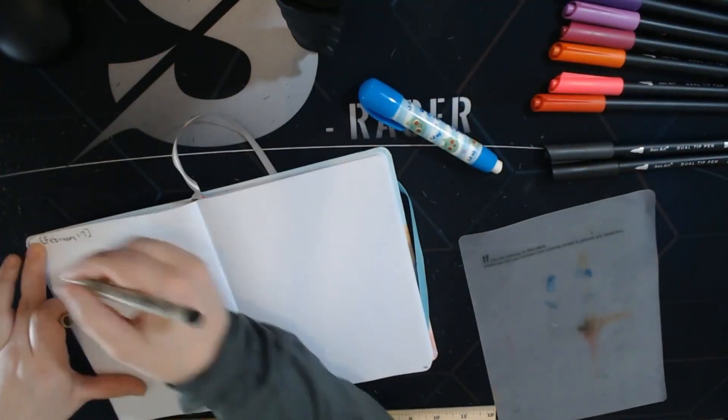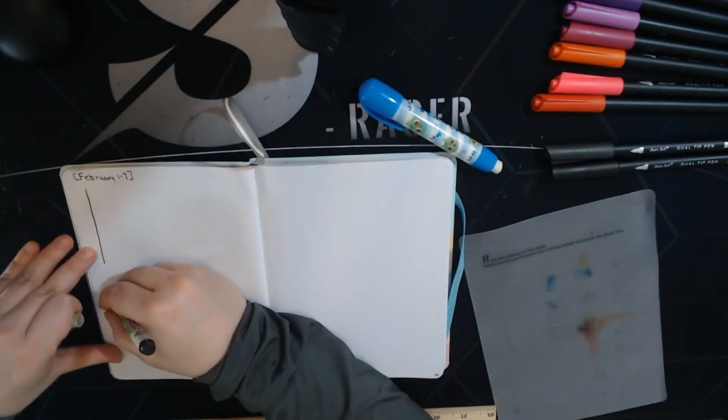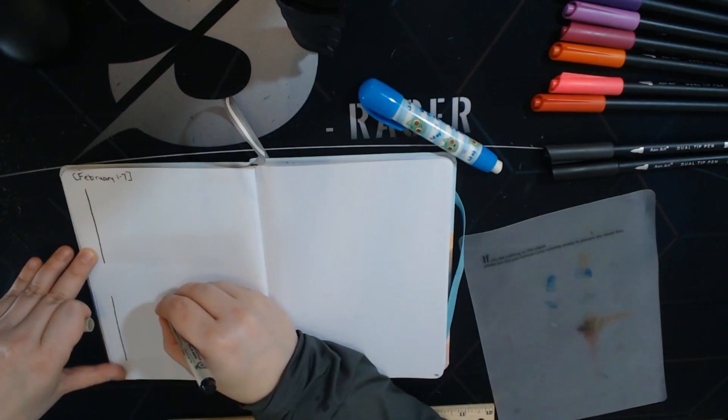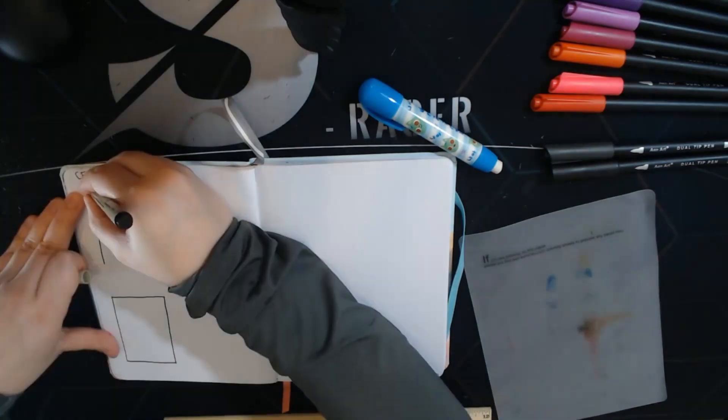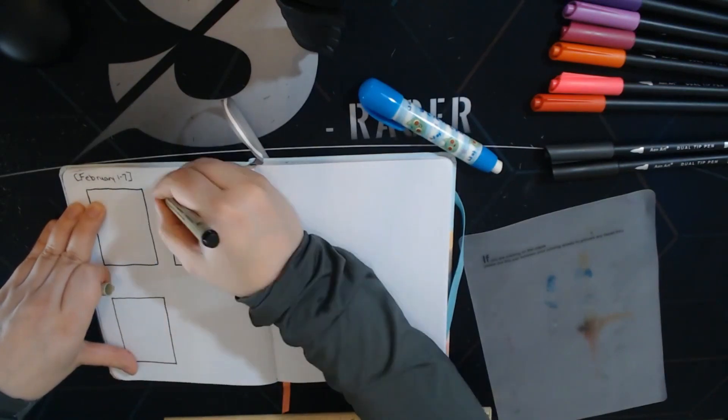And then just started on this first week's setup. This one I free-handed. It's still driving me insane that none of the lines are actually straight because I can't draw a straight line. You can see the ruler. I think I was just getting tired of using it.